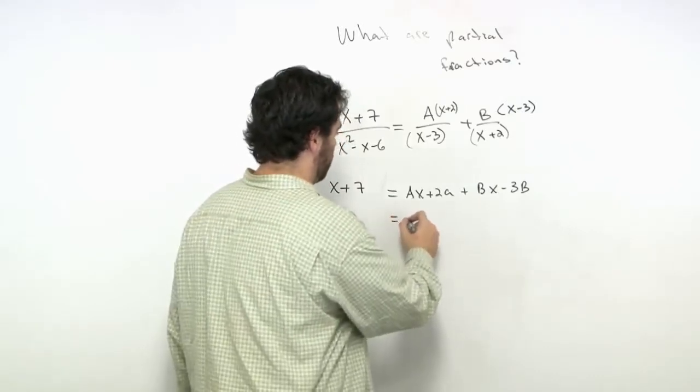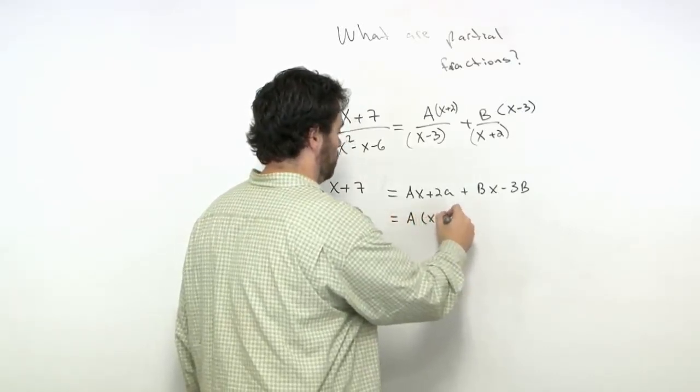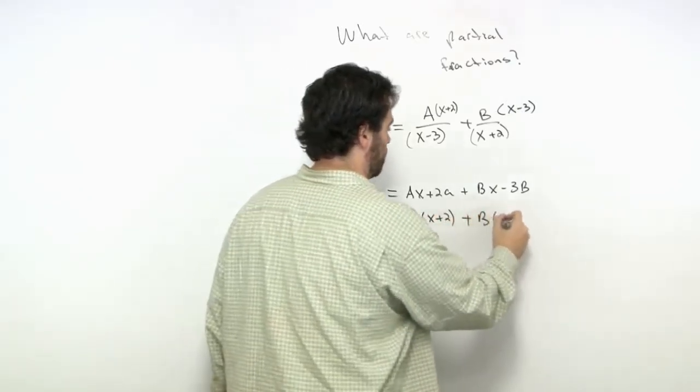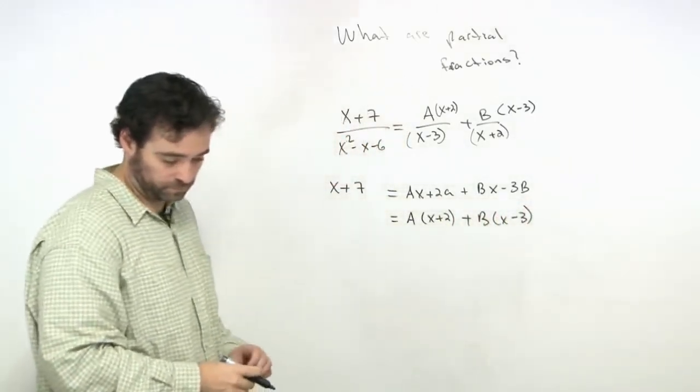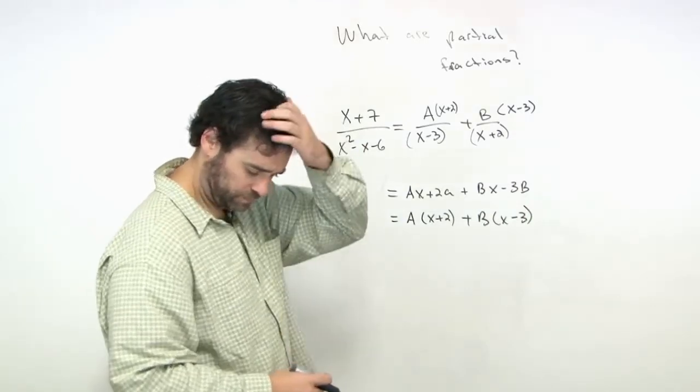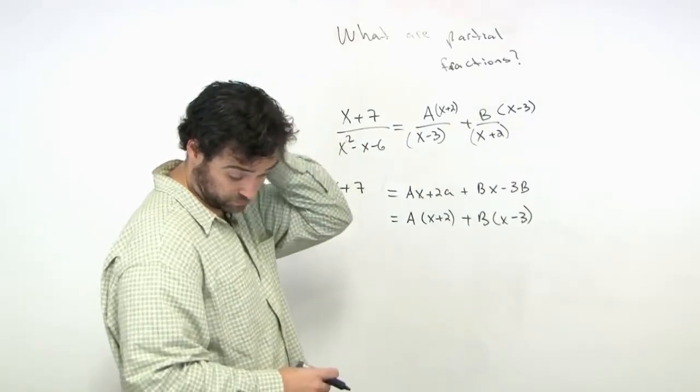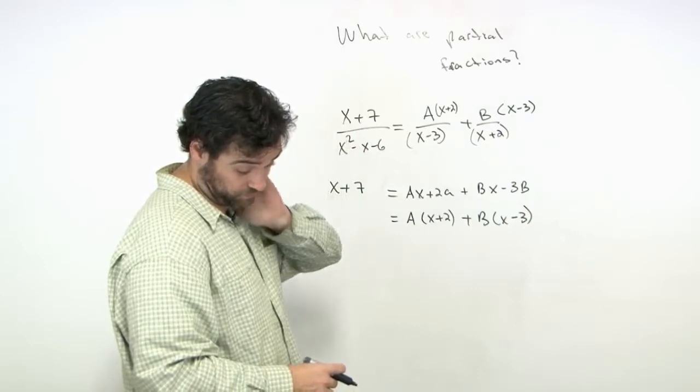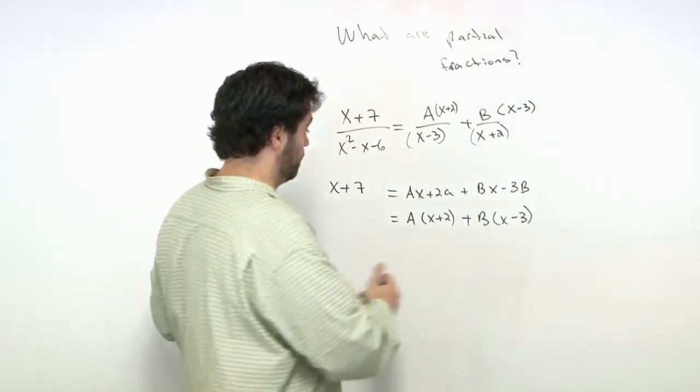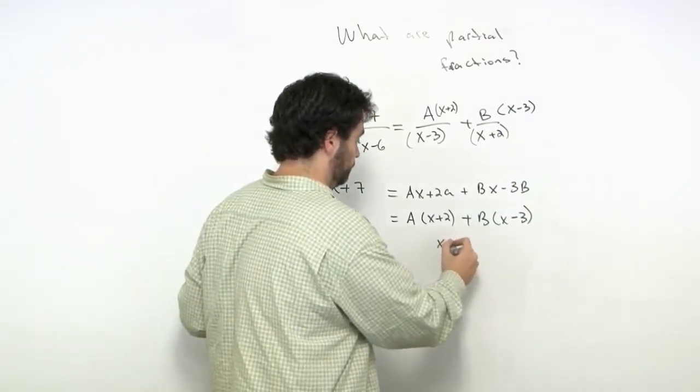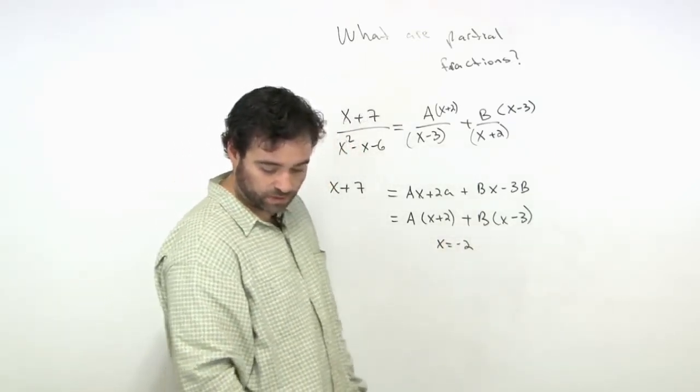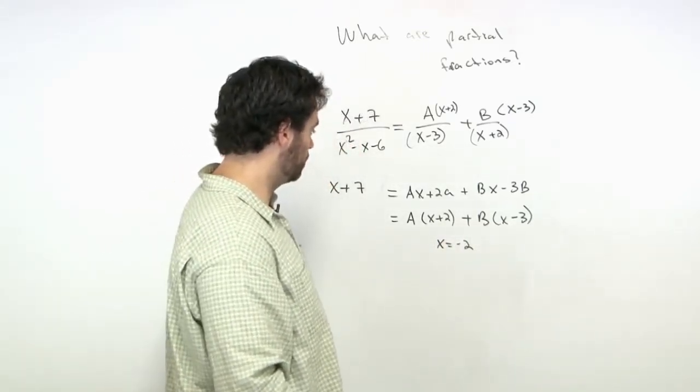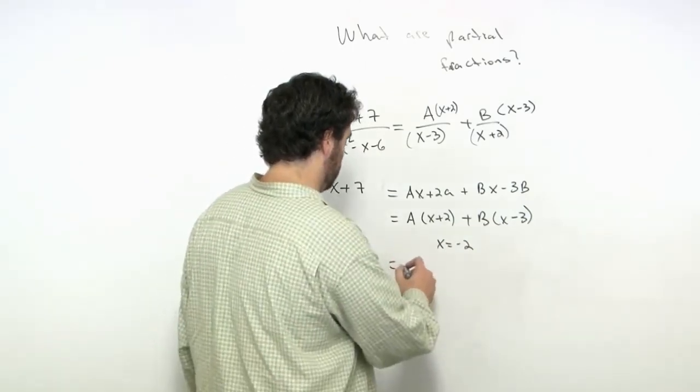Factoring that out, we get A(x+2) + B(x-3). Setting x = -2 and plugging that in...